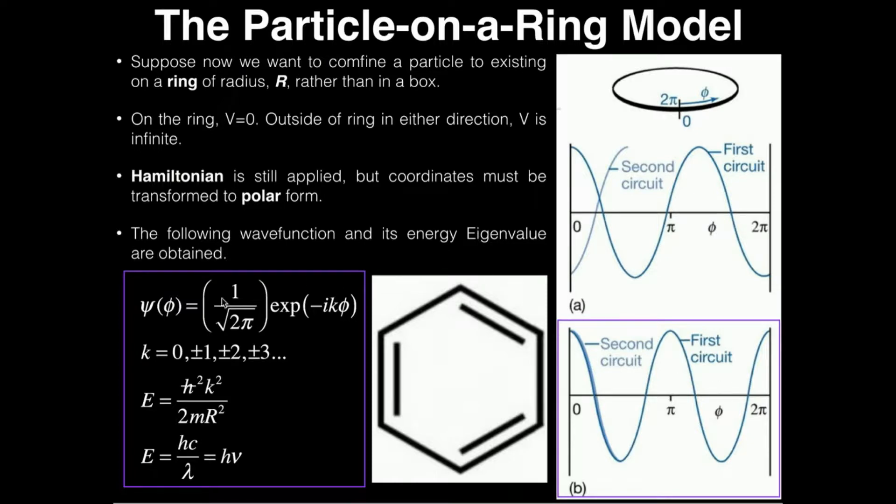When you solve for this wave function, you get this constraint that k has to be a number, not a decimal. It can't be 0.5. It can't be 3.8. It can be 0, and it can be a positive or negative number, but it has to be these whole numbers 1, 2, 3, negative 1, negative 2, negative 3, and so forth. And why is that?